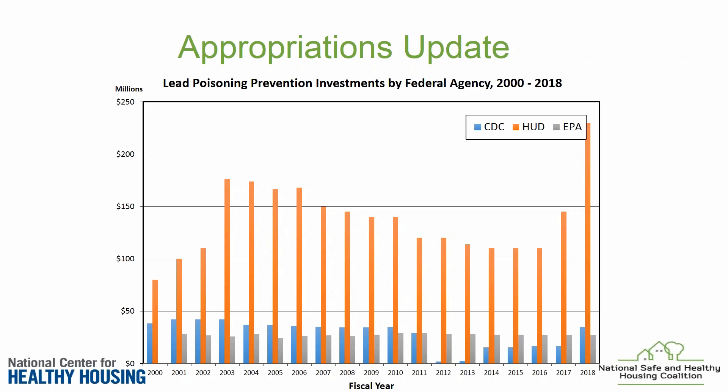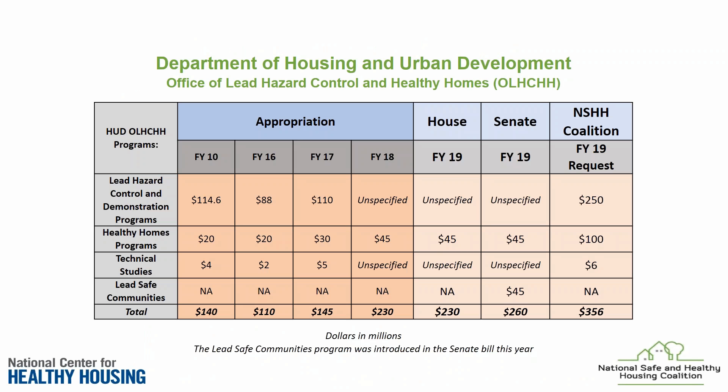I'll go over a bit of an appropriations update on healthy housing programs the National Safe and Healthy Housing Coalition has submitted requests for. The big news in terms of lead poisoning prevention funding is the large increase we saw from 2017 to 2018 at the HUD program — an increase of $85 million — and also the increase at the CDC program for lead poisoning from $17 million to $35 million last year in fiscal year 2018. At HUD, we've gone from $145 million in fiscal year 2017 to $230 million in fiscal year 2018, which was really exciting.